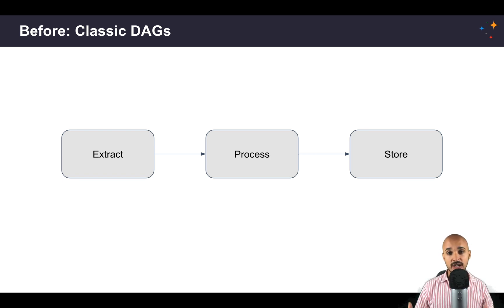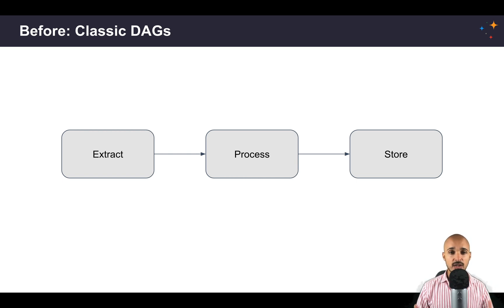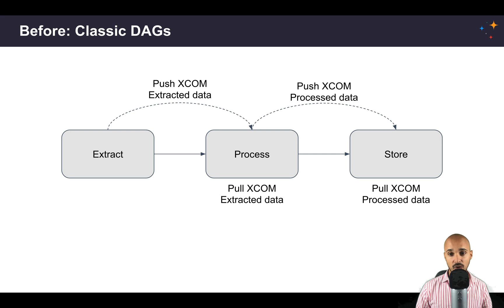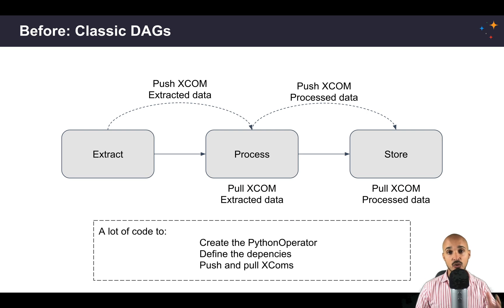With the Python operator, you need to create a Python callable function corresponding to your task. Now let's say that each task needs the output of the previous task in order to move forward. For example, process needs the output of extract, and store needs the output of process. To do that, you will use XCOMs — pushing from extract, pulling in process, then pushing processed data and pulling it from store. As you can imagine, this requires a lot of code: creating Python callable functions, defining dependencies, and calling the push and pull XCOM methods.